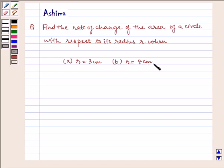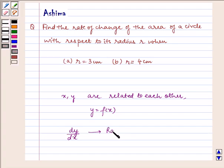Before starting with the solution, let us understand what we mean by rate of change of quantities. If two quantities x and y are related to each other satisfying the rule y = f(x), then dy/dx is called the rate of change of y with respect to x.